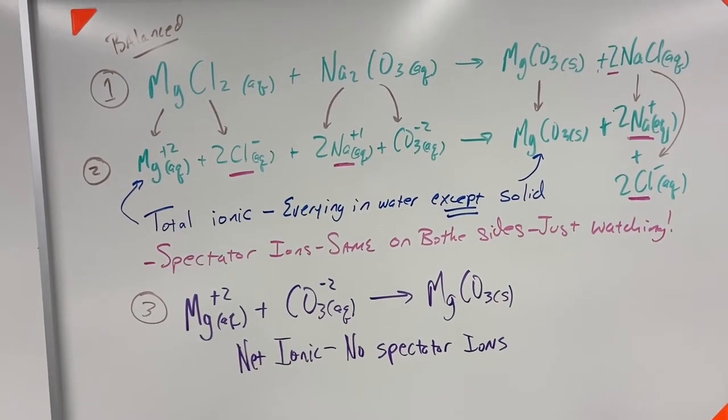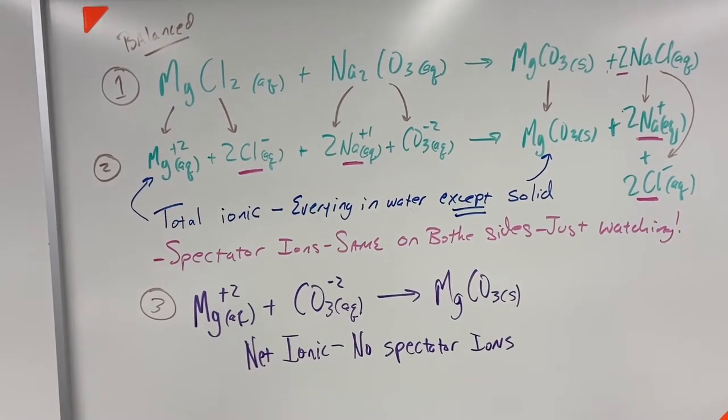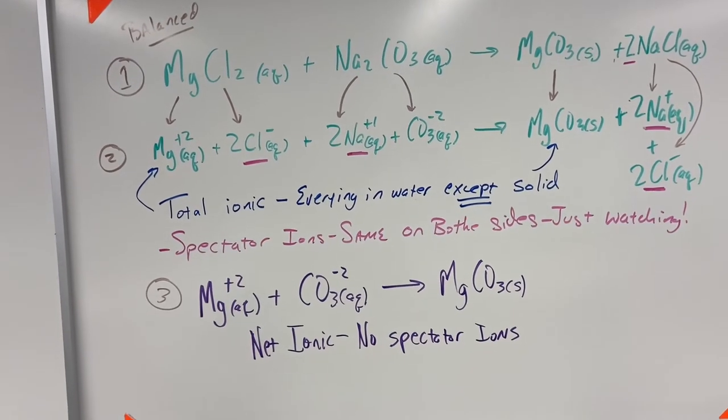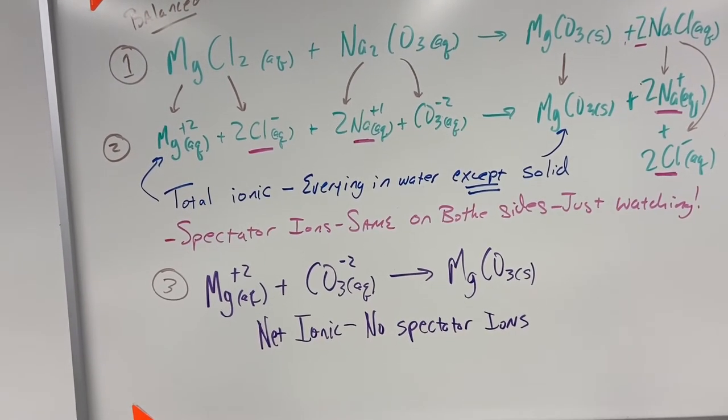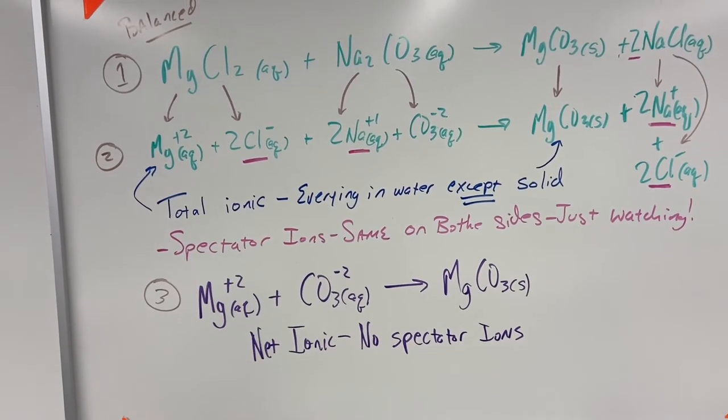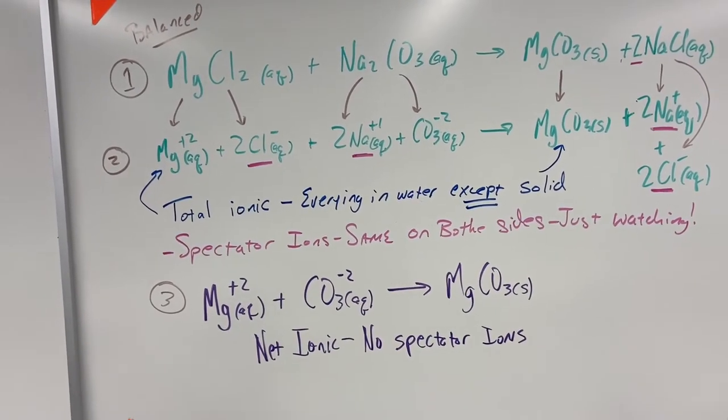This gave us a great method of saying, hey, if we don't have something, can we substitute it or not? For spectator ions, first step we always have to balance. Step number two...